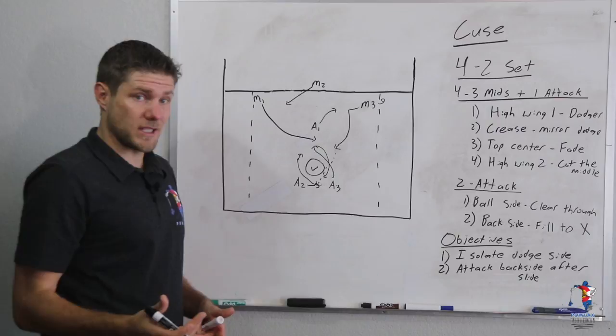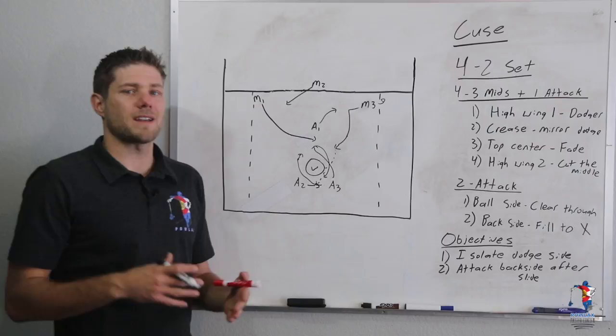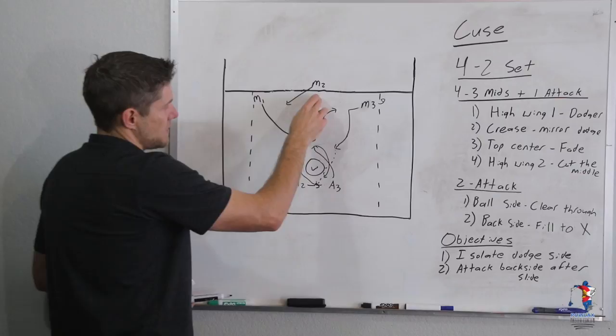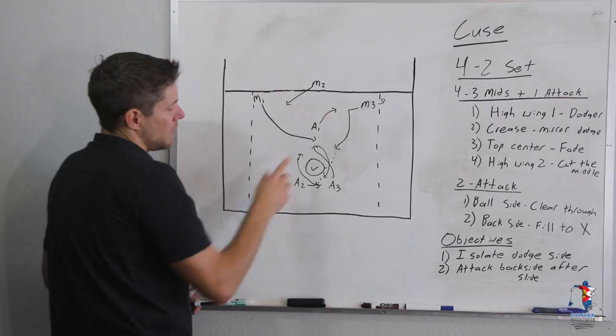Now, after all this movement, one of the benefits of this offense is the fact that we're put back into the exact same place that we were in. Basically, as this dodger comes down and moves the ball, he now becomes the wing player up here. Whoever mirrored up is the top center player. The fade is the backside player and the cut the middle is now the crease player. So now we have all of the same elements in the same spots in our group of four.